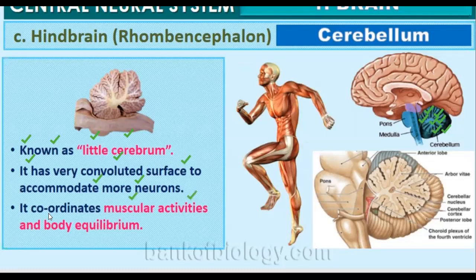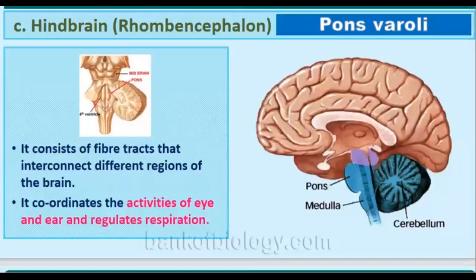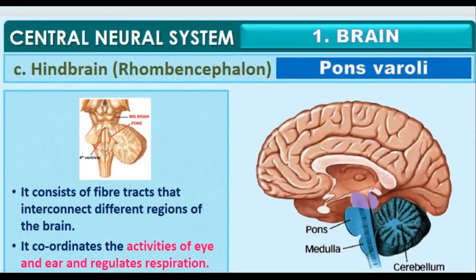The cerebellum coordinates body equilibrium. When a person drinks alcohol, the body equilibrium cannot be maintained because alcohol directly affects the cerebellum. That is why the person is not able to maintain body equilibrium or coordinate voluntary actions.